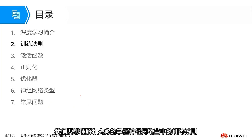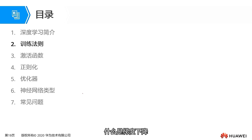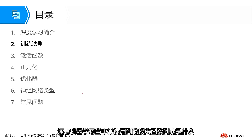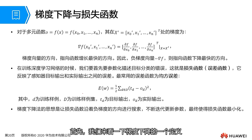In this section, we will guide you to understand the training rules in neural networks. To comprehend and master these training rules, we must first review what gradient descent is, and what exactly are the loss functions commonly used in machine learning.